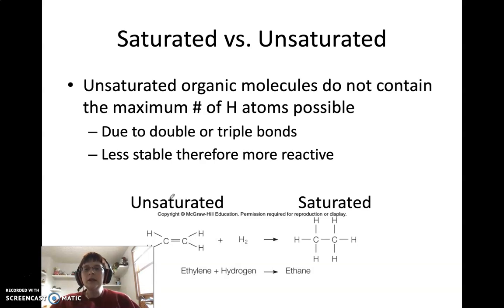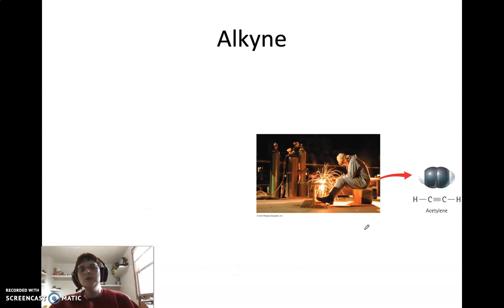So there we've got them labeled now. So unsaturated over on this side with our ethylene, and we've got saturated over here with our ethane. So we've got one last group of hydrocarbons to talk about, and these are the alkynes.